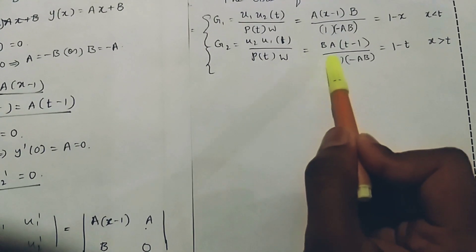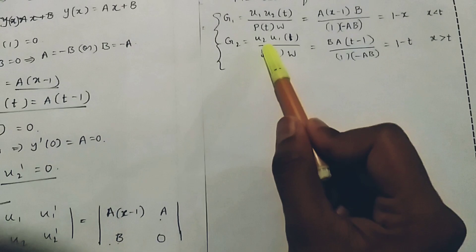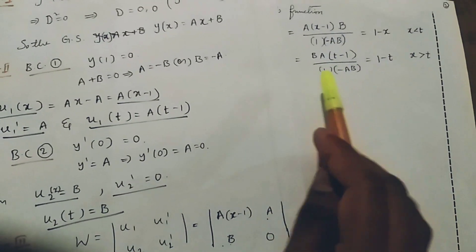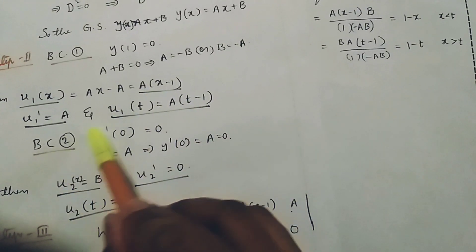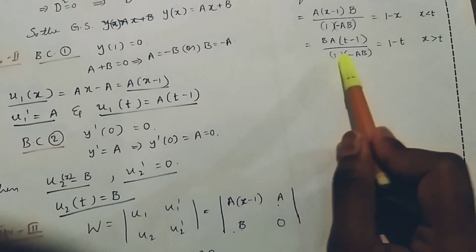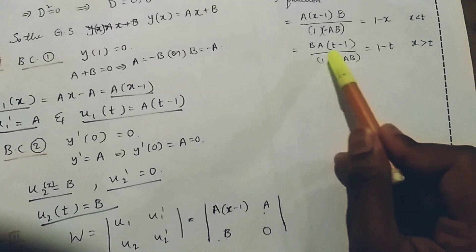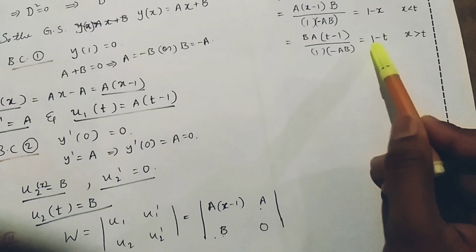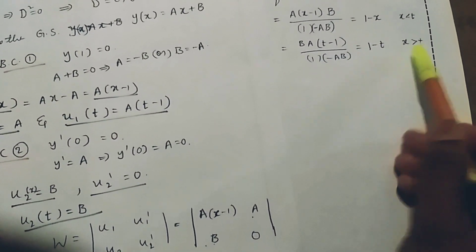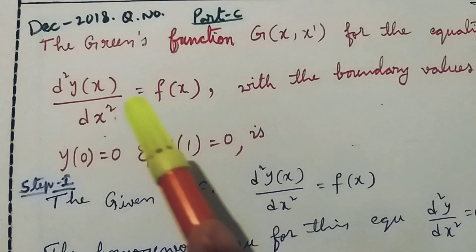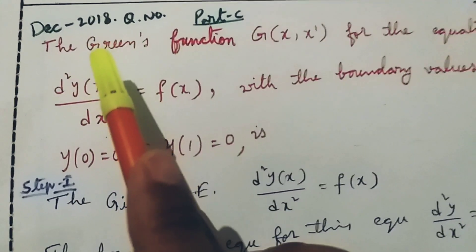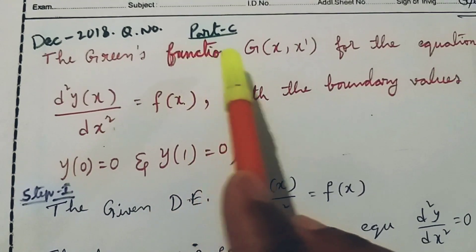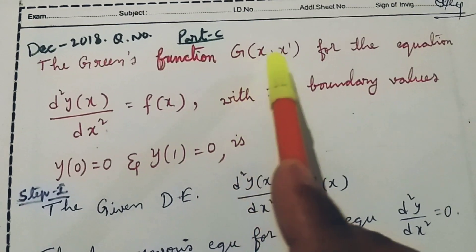And g₂ equal to u₂ times u₁(t) divided by p(t) times W. Here u₂ equals b and u₁(t) equals a(t minus 1), divided by 1 times minus ab. This gives (t minus 1) divided by minus 1, which equals 1 minus t, for x greater than t.